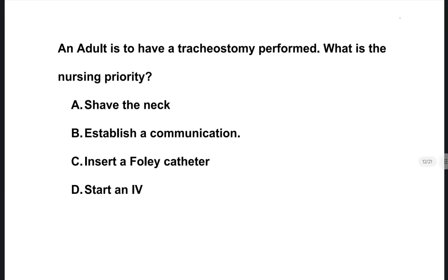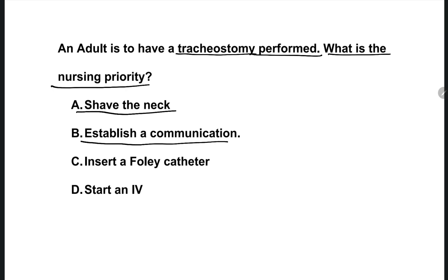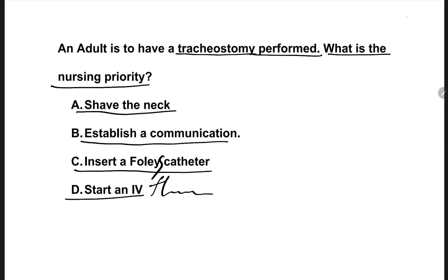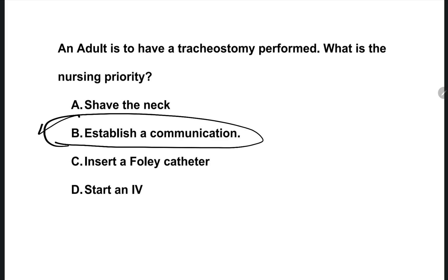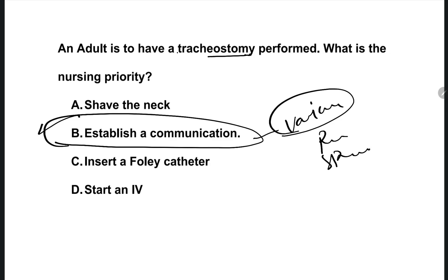The next question: an adult is to have a tracheostomy performed. What is the nursing priority action? The right one is option B, establish communication. After tracheostomy, we need to first look for the patient's voice and any risk to speaking. Our first priority is communication.